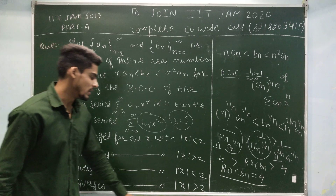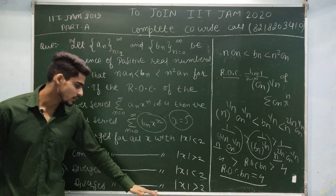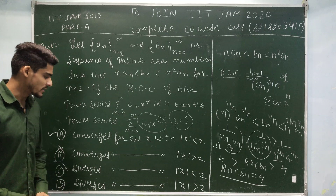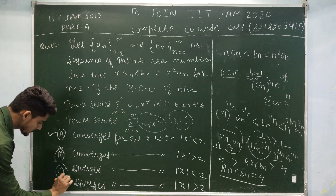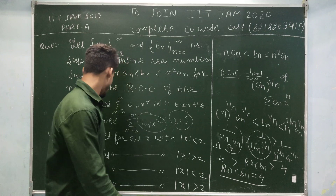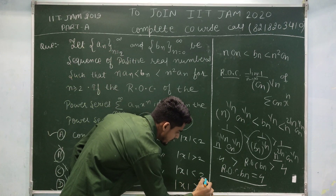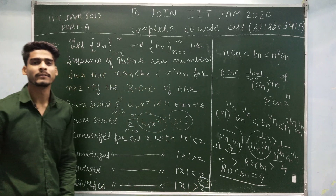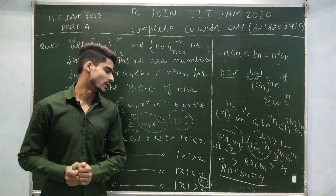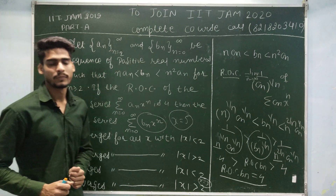If we take x = 3, the second option — which says the series converges for all x with |x| > 2 — is not correct, because the ROC of bₙ is exactly 4. So option A is the correct option. Thank you friends.